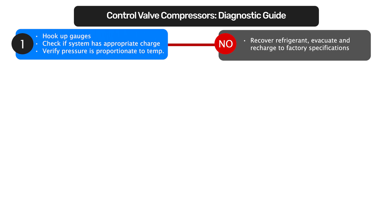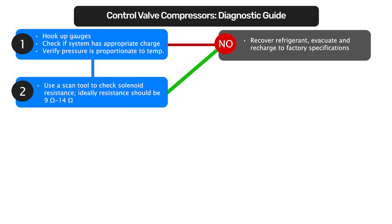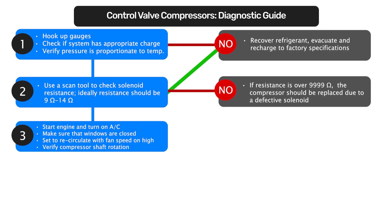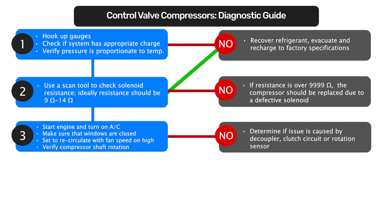Once charge and pressure-temperature relationship is verified, use a scan tool to check solenoid resistance. Ideally, resistance should be 9 to 14 ohms. If resistance readings are over 9,000 ohms, the solenoid is defective and the compressor should be replaced. Once you have verified solenoid function, turn on the AC with fan speed on high, windows closed, and select the recirculation feature.